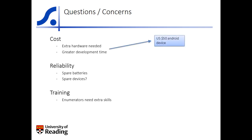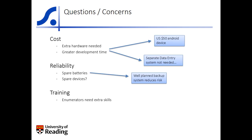Hardware costs are constantly falling. For instance, a versatile Android smartphone can be bought for US$50. When using paper to collect data, a data entry system is needed at a later stage. This is not needed when the data are already digital, so the extra time spent before the collection stage can usually be saved later in the project. A well-planned backup system can reduce the risk of hardware failure, and as it is much easier to copy a digital file than a paper form, in many ways a digital collection system is more reliable. Regarding the training, the current software is built to be very intuitive, requiring not much more training than a complex set of paper questionnaires would.